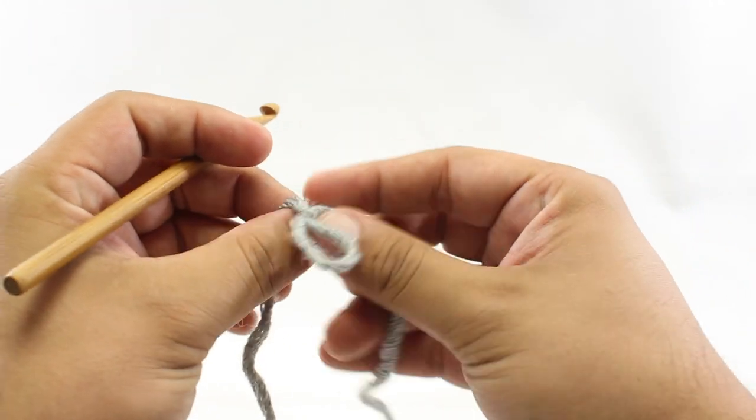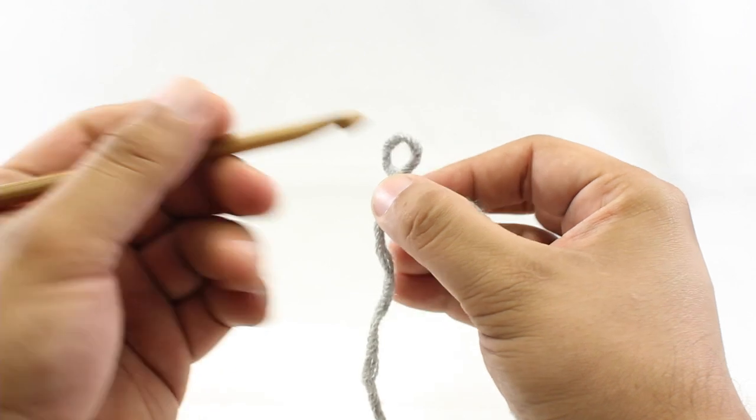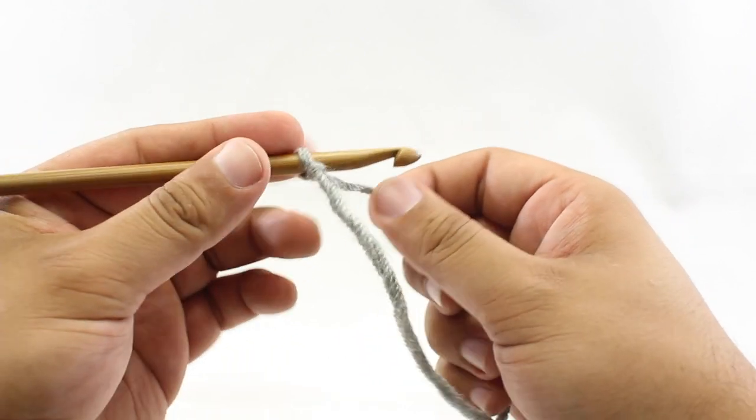For step one, we're going to make a slip knot, which I've already done, and we'll place that on our crochet hook. And then we're going to chain three.